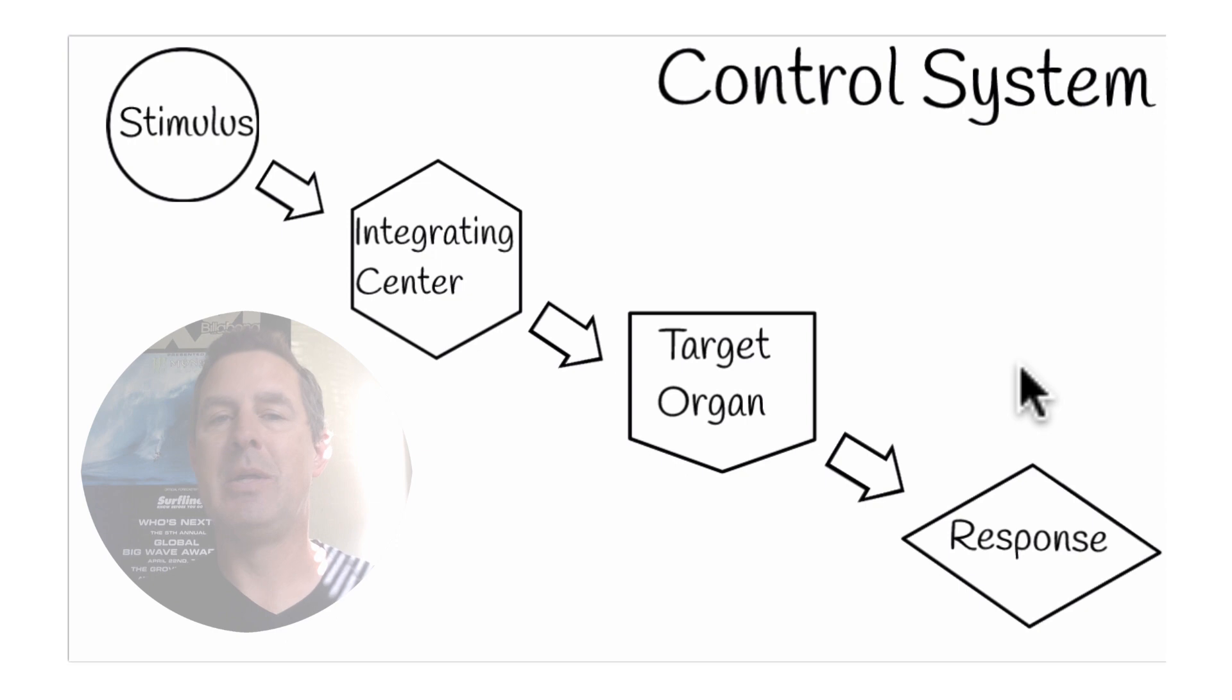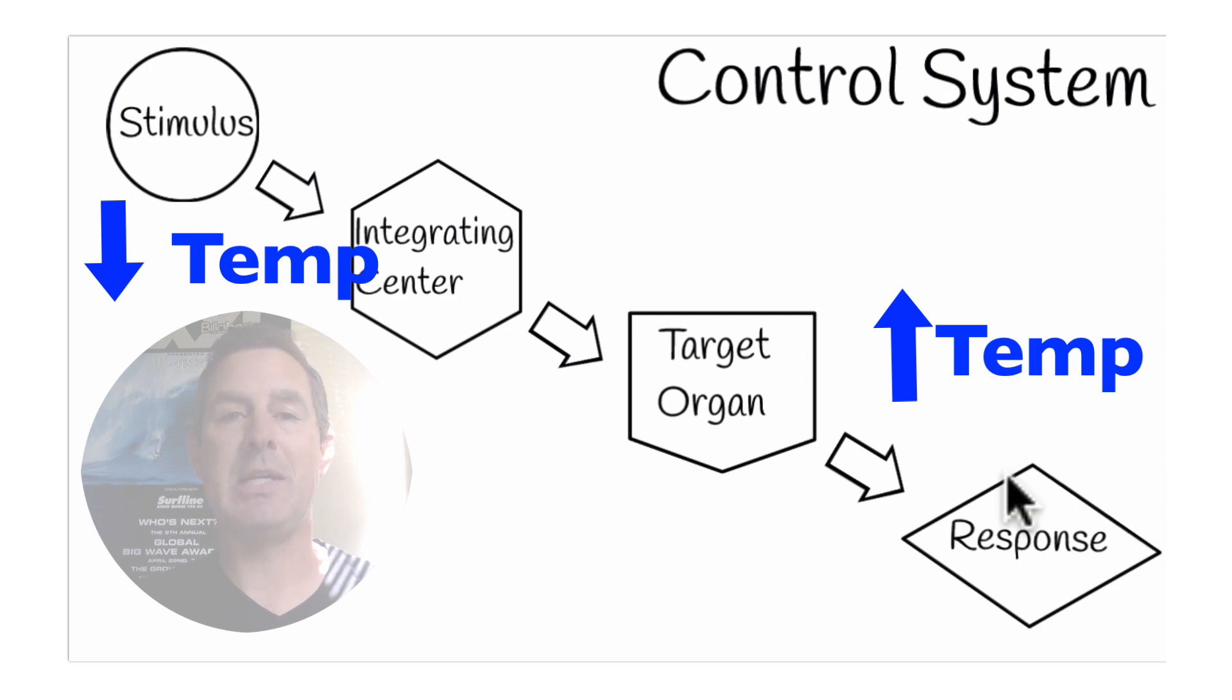So the body's response is to increase body temperature. I just want to be clear—when I say increase body temperature or increase any variable or decrease any variable, I'm not suggesting, at least in this case with temperature, that we're elevating our temperature above the acceptable range. We're increasing it to get it back into that acceptable range. Now this process I just described is what's known as negative feedback. Negative feedback maintains homeostasis.